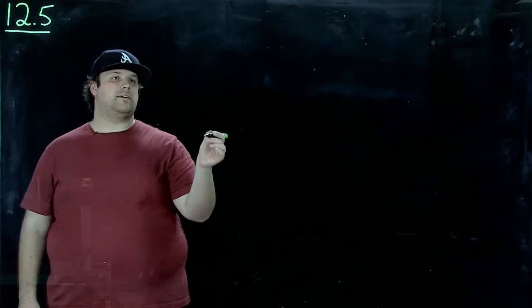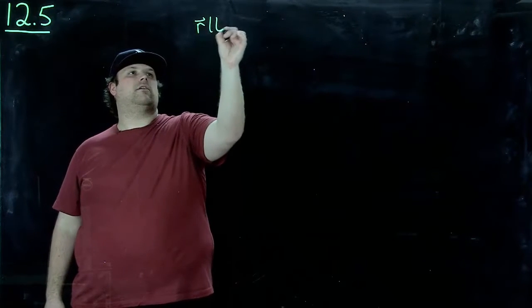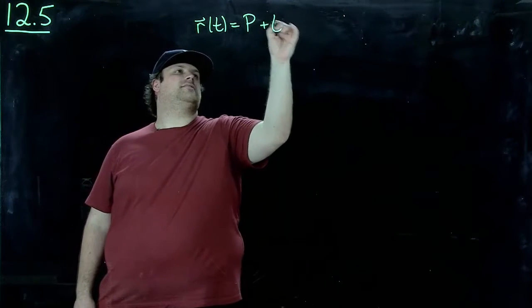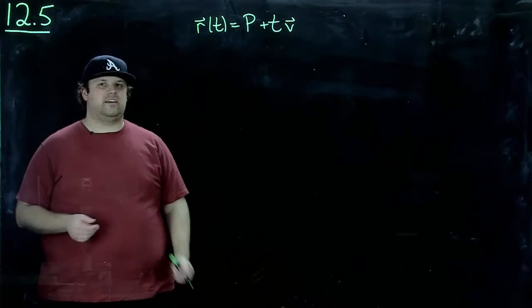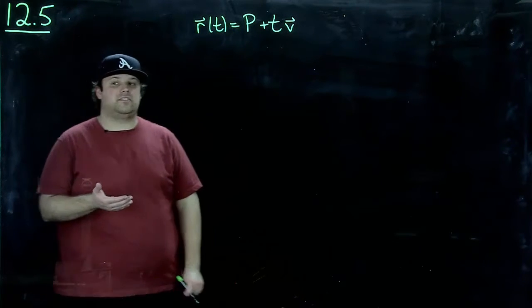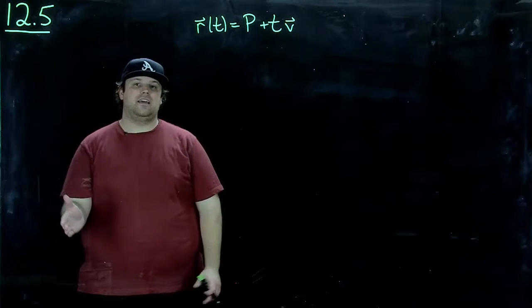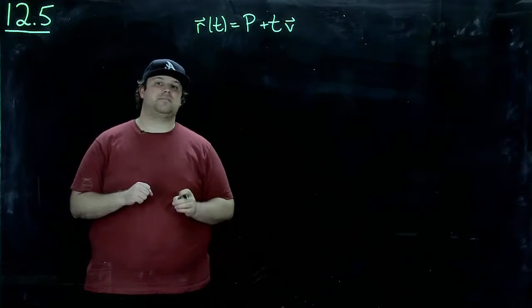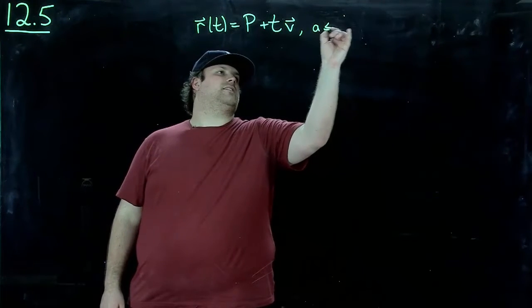Well, remember, we have a line here. R of t is the point on the line plus t times v. If we only want a piece of that line, let's say we want to start at when time is equal to a and end at when time is equal to b. If we just want that piece of the line, well, then all we really have to do is restrict t.